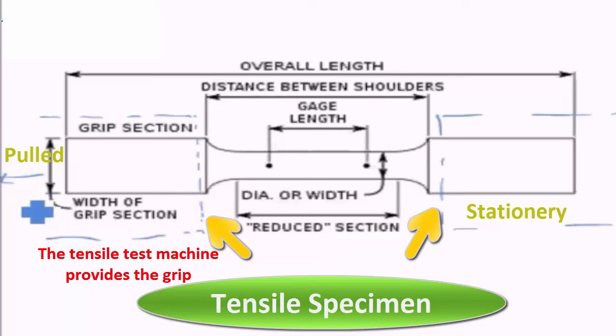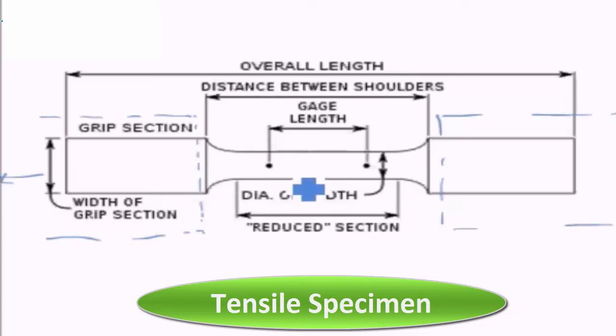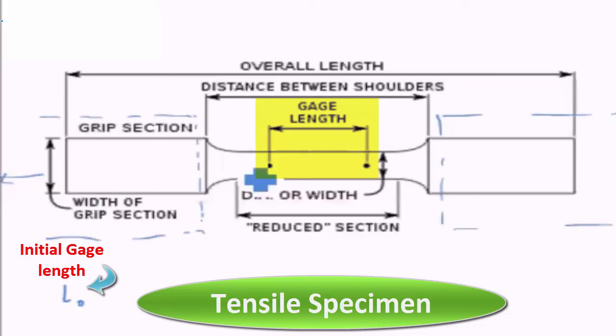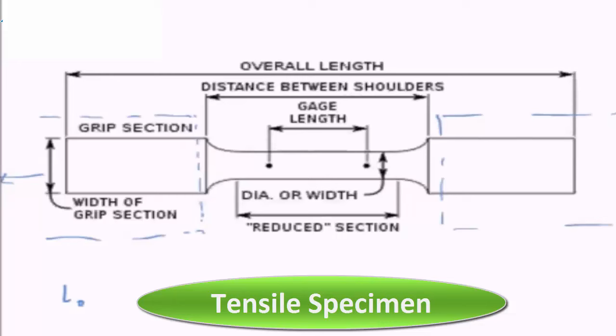The region between two marked points is the gauge length, and this is where the actual measurement is made. The initial gauge length is L₀. During the tensile test, the change in this gauge length is measured continuously. At any moment we have the stress measurement from the applied load, and against that we have the instantaneous dimension to calculate strain.